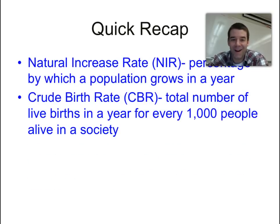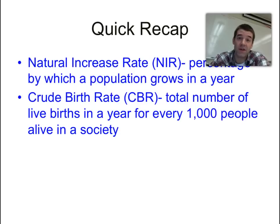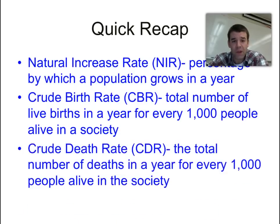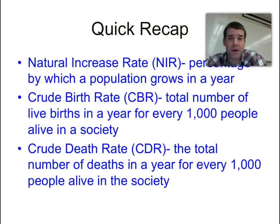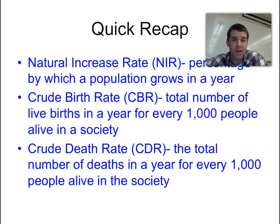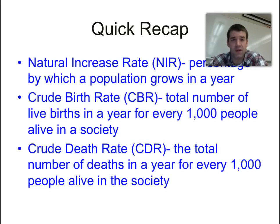The crude birth rate, or CBR, is the number of people born per thousand in any given population. The crude death rate is the number of people that die per thousand. When we figure out the natural increase rate, it's basically just taking the crude birth rate, subtracting the crude death rate, and turning it into a basic percentage.